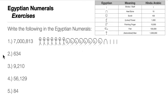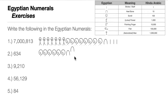For number two, 634: write six scrolls (600), three heel bones (30), and four strokes (4). That gives us 634.